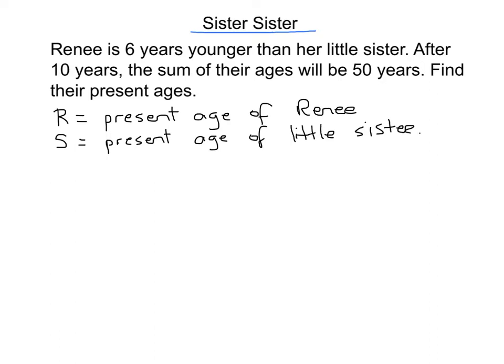Let's do it algebraically first. We're given that Renee is six years older than her little sister. Let's write that algebraically: R equals S plus 6. So now we have equation one. Next, after 10 years the sum of their ages will be 50.